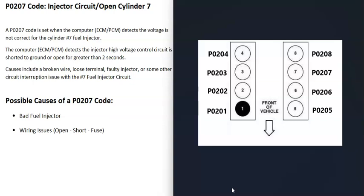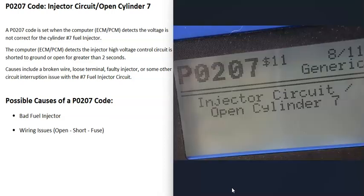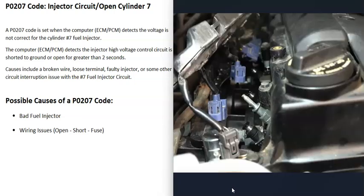The first thing to do when you get this code is to locate the number 7 cylinder on your particular vehicle, since there are differences, because that's going to be the one having the problem. The main things that cause this are either the fuel injector on cylinder 7 has gone bad and needs to be replaced, or there's some kind of wiring issue going to it.